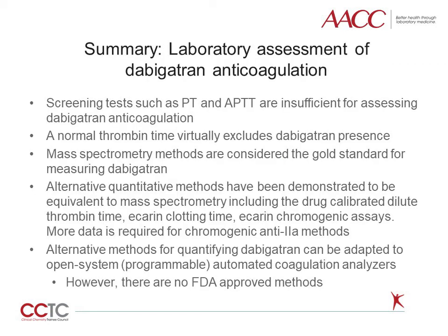In summary, screening tests such as the PT and APTT are insufficient for assessing Dabigatran anticoagulation and cannot be used to exclude the presence of drug. A normal thrombin time virtually excludes Dabigatran presence. Mass spectrometry methods are considered the gold standard for measuring Dabigatran, although there is no international reference for calibration. Alternative quantitative methods have been demonstrated to be equivalent to mass spectrometry, including the drug-calibrated dilute thrombin time, ECRIN clotting time, and ECRIN chromogenic assays. More data is required for chromogenic anti-2A methods, but they appear adequate. Alternative methods for quantifying Dabigatran can be adapted to open systems that are programmable, automated coagulation analyzers; however, there are no FDA-approved methods.